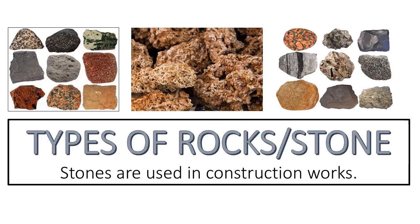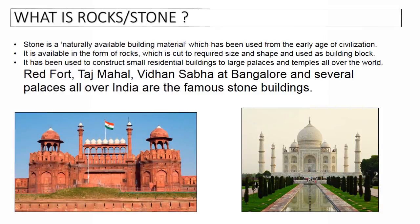Today we are going to talk about the types of rocks, or you can say stone. The first question that comes to mind is: what is rock and what are its uses in construction engineering? Stone or rock is a naturally available building material which has been used from the early age of civilization to construct a shelter. It is available in the form of rocks, which are cut to required size and shape and used as building blocks.